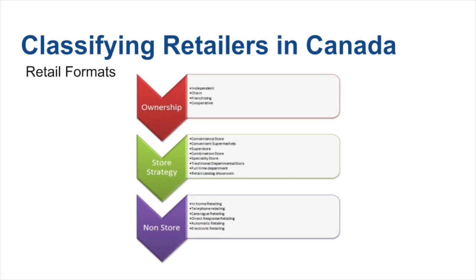We also have non-store retailing, which is a growing area. There are various types: in-home retailing — Avon is a classic example where products get sold at home. Telephone retailing, where people call and get the product delivered to them. Catalog retailing, where there is a printed catalog and people can order from it. Direct response retailing, where they send out a catalog or flyer in the mail and people order directly from that. Automatic retailing — a classic example is a vending machine where you put money in and the product pops out. And electronic retailing, which is online-based.